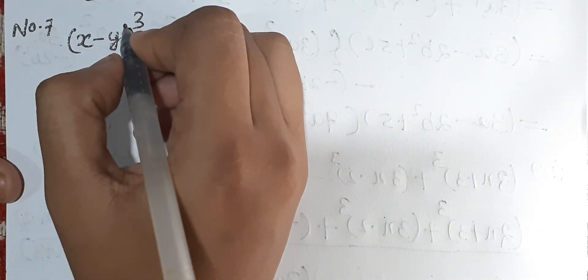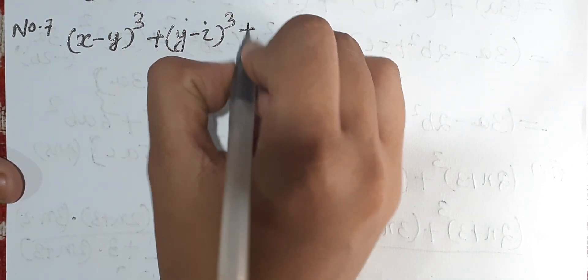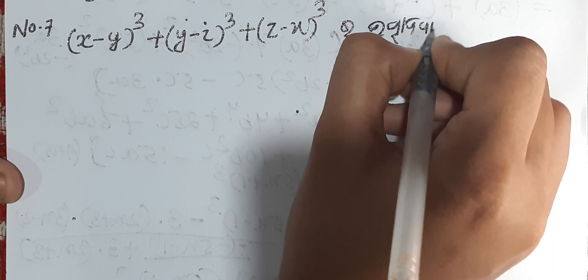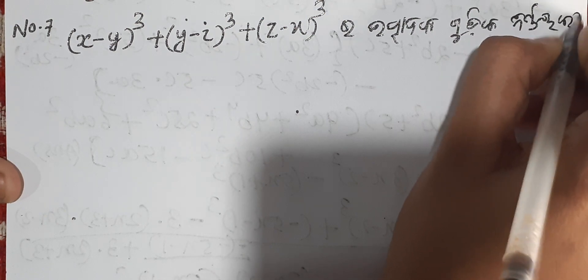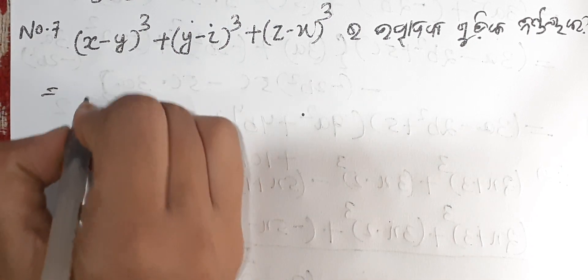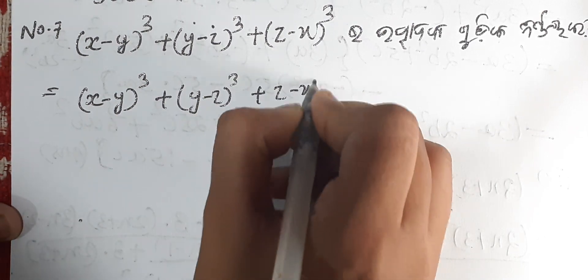Question number 7: That is, x minus y whole cube plus y minus z whole cube plus z minus x whole cube. Find the value. Taking LHS: x minus y cube plus y minus z cube plus z minus x cube.